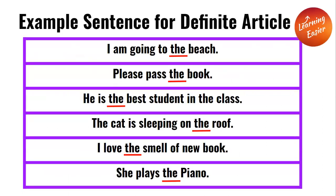Example sentences for definite article: 'I'm going to the beach.' 'Pass the book.' 'He is the best student in the class.' 'The cat is sleeping on the roof.' 'I love the smell of a new book.' 'She plays the piano.' In all of these sentences, the word 'the' is the definite article, as it's referring to a specific noun in each and every sentence.